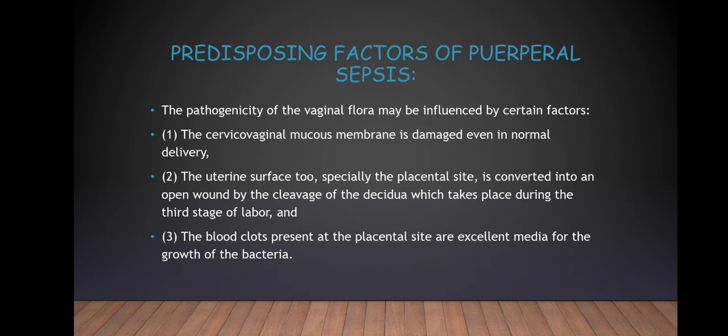Predisposing factors of puerperal sepsis: The pathogenicity of the vaginal flora may be influenced by certain factors. 1. The cervical vaginal mucous membrane is damaged even in normal delivery. 2. The uterine surface, especially the placental site, is converted into an open wound by the cleavage of the decidua which takes place during the third stage of labour. 3. The blood clots present at the placental site are excellent media for the growth of bacteria.